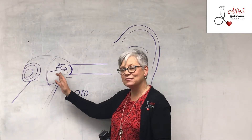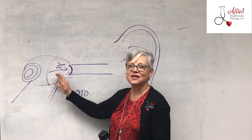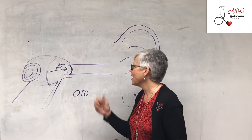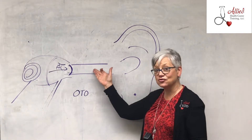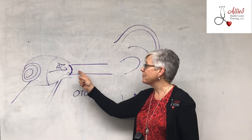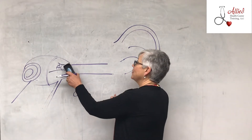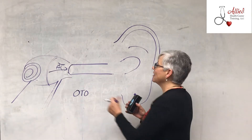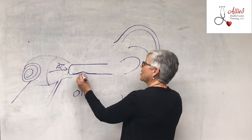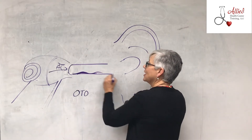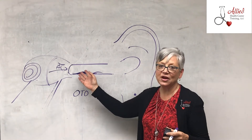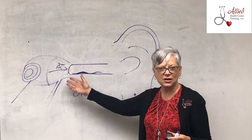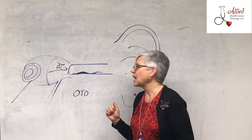These two — otitis media and interna — generally get antibiotics if it's a true infection. For otitis media, sometimes they'll give you a decongestant in hopes of draining it out, otherwise an antibiotic. For otitis externa, you can get antibiotic ear drops. The drops won't go past the tympanic membrane, so they're used for the external ear. This is also known as swimmer's ear. Sometimes people recommend putting a drop of alcohol or drying ear drops in there to help dry it out.